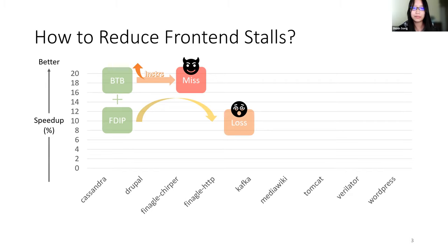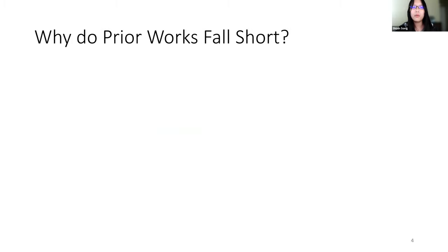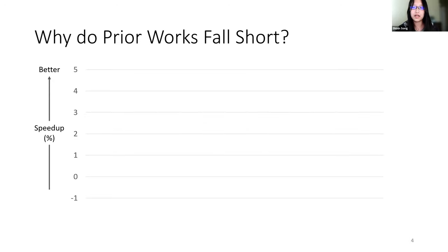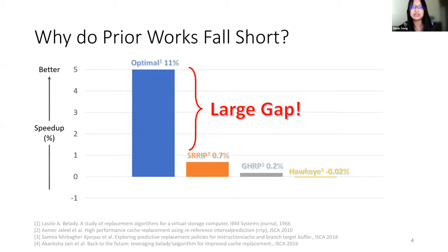We measure how much loss FDIP suffers by showing the speedup provided by the ideal optimal replacement policy over LRU replacement policy when applied to the BTB. On average, the optimal replacement policy achieves 11% greater performance. We then measure several state-of-the-art replacement policies including SRRIP, JIIP, and Hawkeye, and compare them with FDIP using LRU. While optimal offers 11% speedup, existing replacement policies offer no more than 0.7% speedup — a large gap.